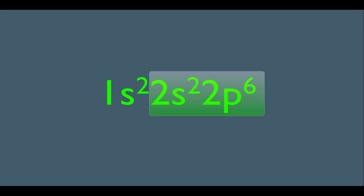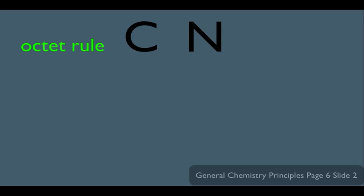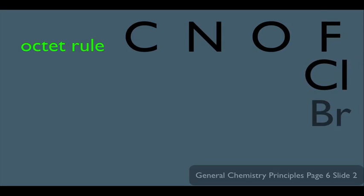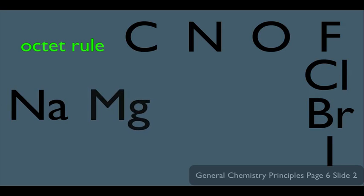However, this is only applied to certain elements on the periodic table. The only elements that have to follow the octet rule are carbon, nitrogen, oxygen, fluorine, chlorine, bromine, iodine, sodium, and magnesium. Notice I put them in this arrangement because that's where they match up on the periodic table of elements so that you can easily remember these.